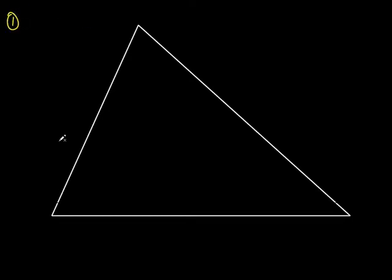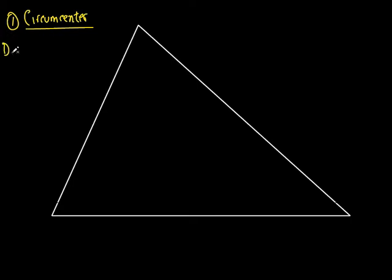The very first thing we learned when we dealt with this triangle — remember we had three lines, they all intersected at one point, and we had three special circumstances. The first one was called the circumcenter. And how did we find the circumcenter? We had to draw the perpendicular bisectors. That's exactly what I'm going to do right now — draw the three perpendicular bisectors.